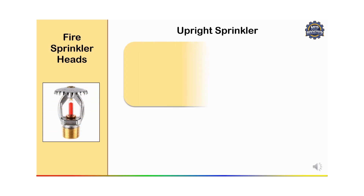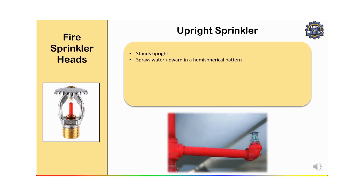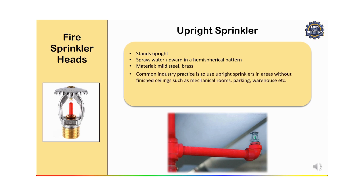Next we have the upright sprinkler, installed upright with the deflector facing upward. The water is dispersed downward and outward when activated. It is mounted on the ceiling with the deflector facing upward, spraying water in a semi-spherical pattern. The material is mild steel or brass. Common industrial practice is to use upright sprinklers in areas without a finished ceiling such as mechanical rooms, parking areas, and warehouses, or where equipment might obstruct pendant sprinklers.